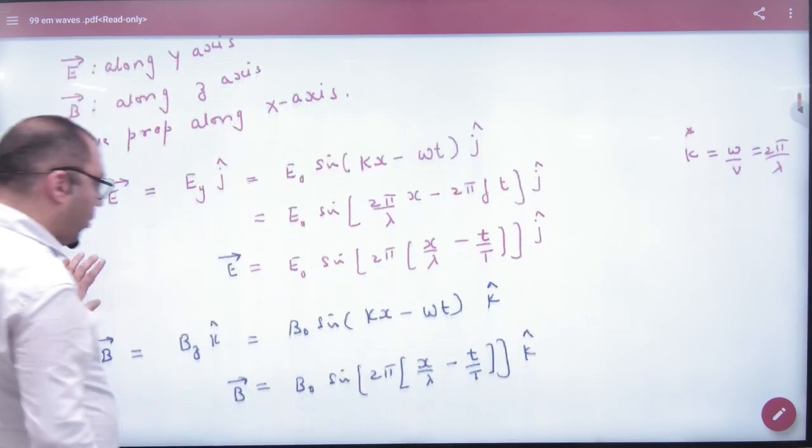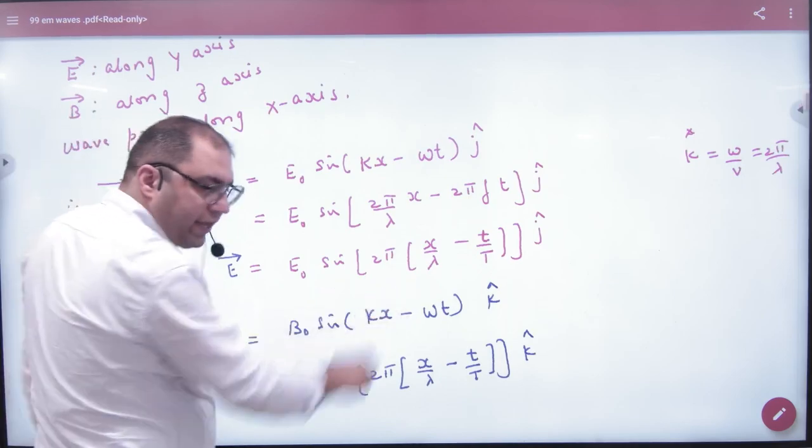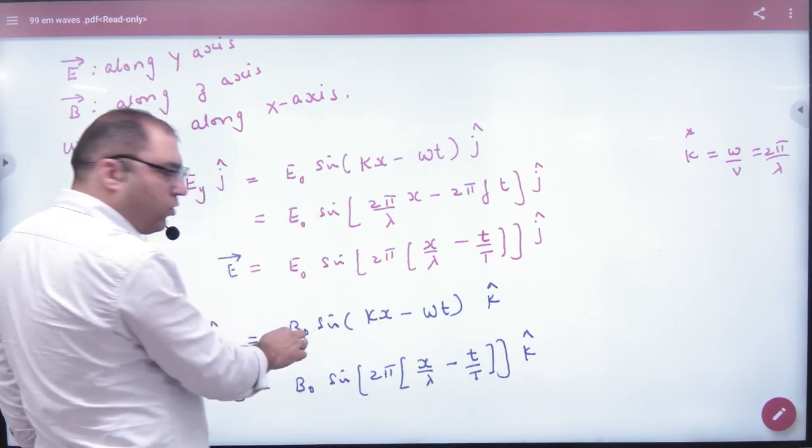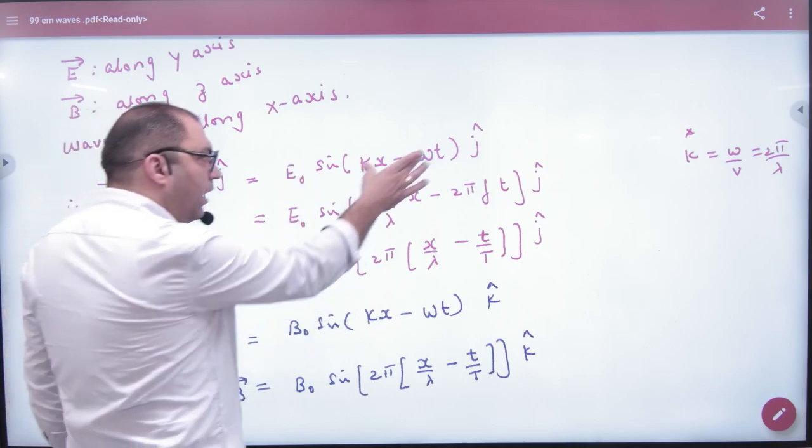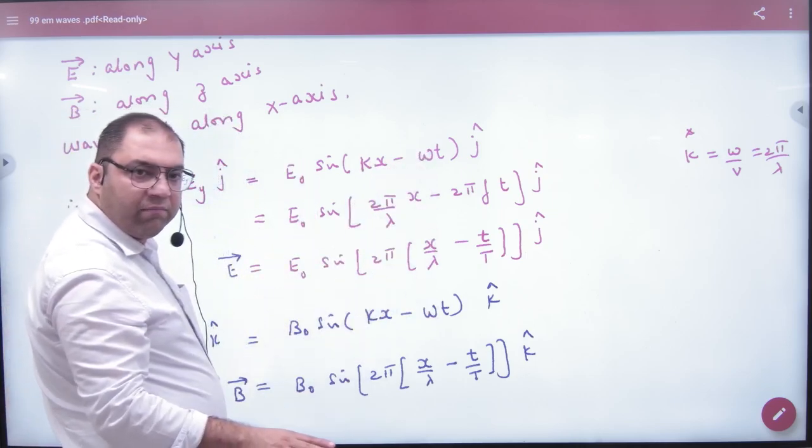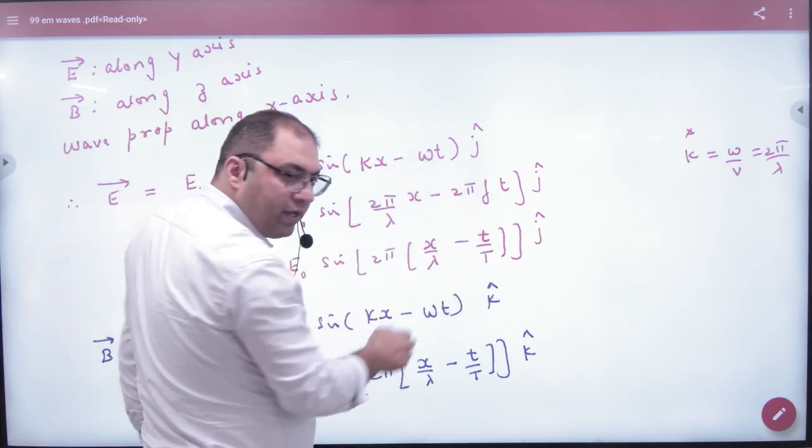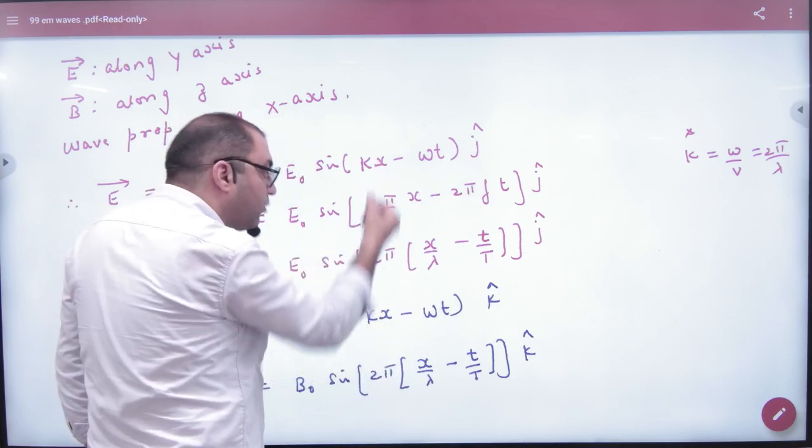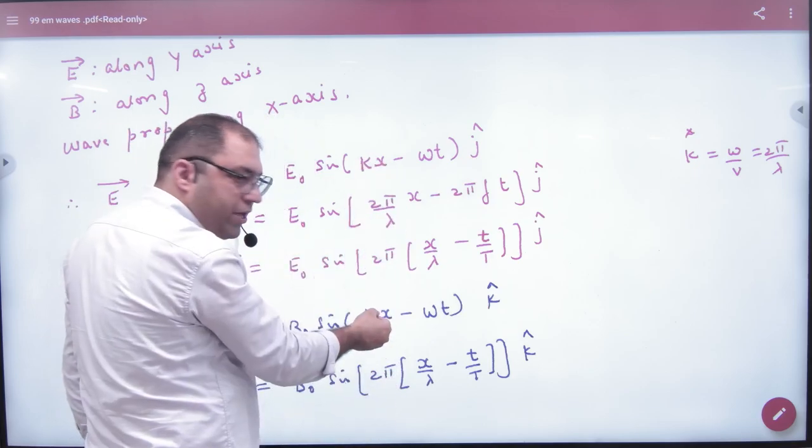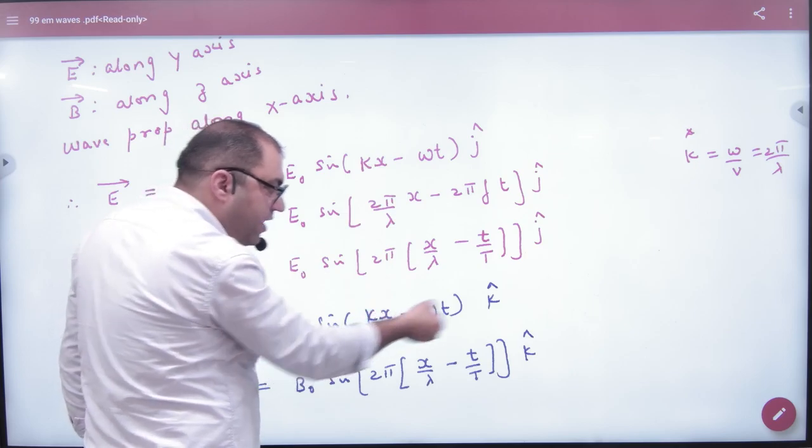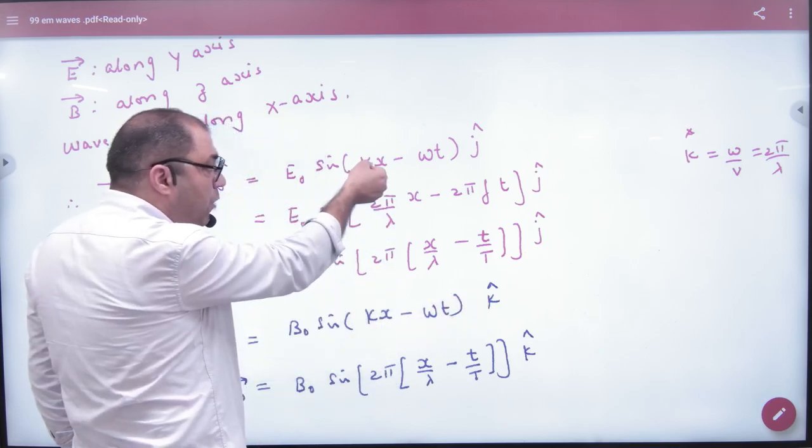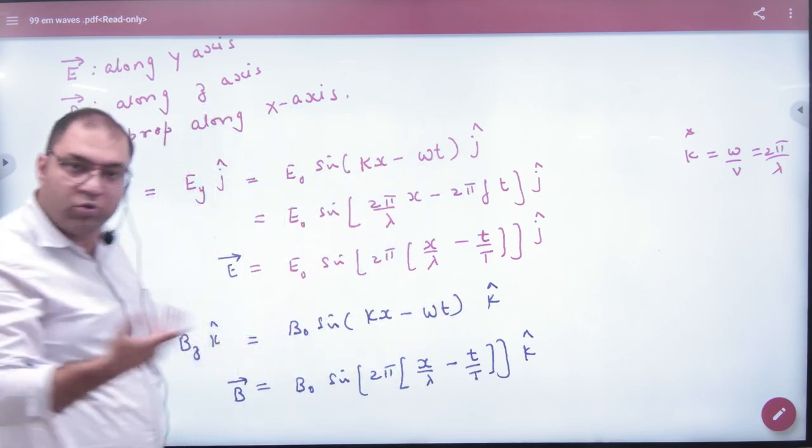When you see the electric and magnetic field equation, the magnetic field equation is like this: B0 sin - the formula is also the same. It is just the difference. It is j-cap and it is k-cap. So there was x here because the wave propagation is x-axis, which is perpendicular to k-cap. And the wave propagation is x-axis, which is perpendicular to j-cap.